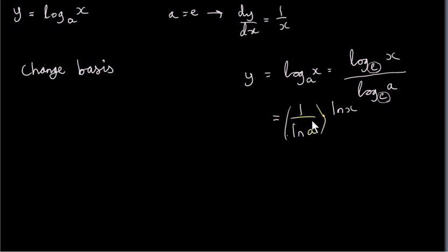Now, 1 over ln of a is just a number, because a is just a number. a is a constant. It's fixed. x is the variable.